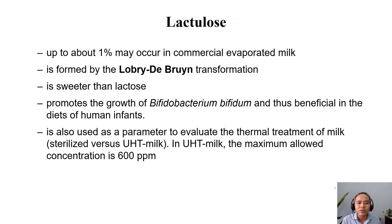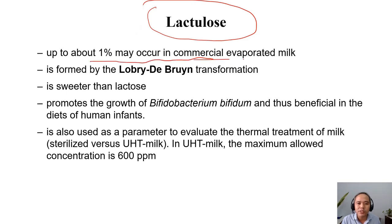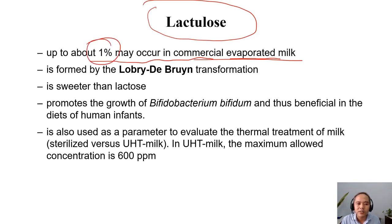Now we talk about lactulose. What is lactulose? Lactulose is an isomeric product from lactose when we heat the milk. Up to 1% of lactulose may occur in commercial evaporated milk. Why does quite a lot of lactulose occur in this milk? Because this milk has been evaporated, meaning it has been heated quite a lot. They need to heat to remove the water to concentrate the milk, and the longer the heating time, the higher the amount of lactulose that may occur.